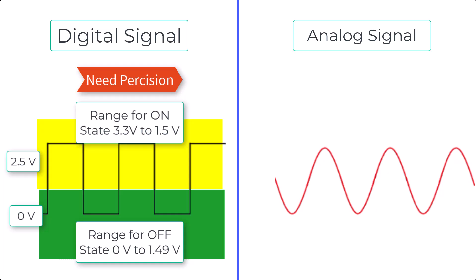Many digital systems are designed to interpret a range of voltages as on or off. For example, if the on voltage is supposed to be 3.3 volts, a system might still recognize 2.5 volts as on, depending on its tolerances. Tolerance helps maintain reliability.